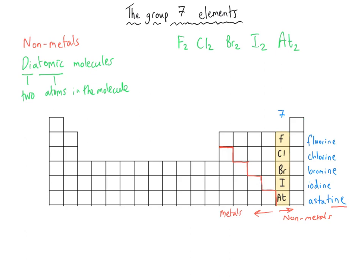By far the most common elements in group 7 to be the subject of an exam question are the three: chlorine, bromine, and iodine. When discussing the group 7 elements we are most likely talking about the molecules, but not always, so you need to be careful when talking about atoms or molecules and pick the right one for the right situation. One last important fact: all halogens are poisonous. They are a range of solids, liquids, and gases, but each and every one of them is poisonous.